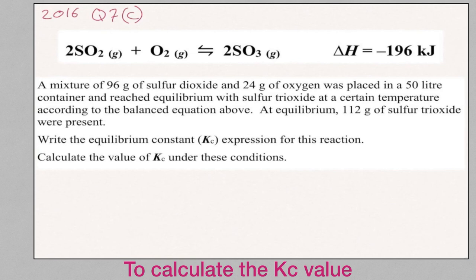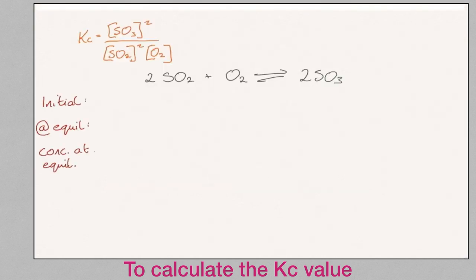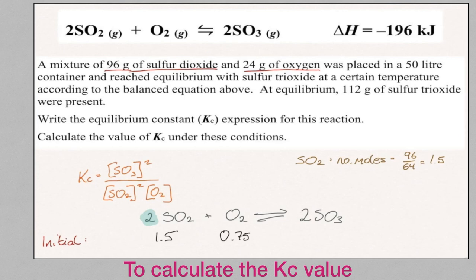You are asked to write the equilibrium constant expression and then to calculate the value of the equilibrium constant. Write down the equilibrium constant expression using the chemical reaction, paying attention to the number of molecules and putting them as a power. Step 1: rewrite the chemical equation at the top centre of the page. Step 2: write down the initial, at equilibrium, and concentration at equilibrium. Step 3: we are given the information in grams, so we must convert these to moles. Step 4: fill in the initial data — for example, there are 1.5 moles of sulphur dioxide and 0.7 moles of oxygen. The product is always zero for initial because the reactants have not yet reacted.